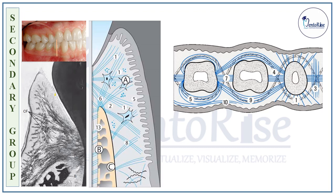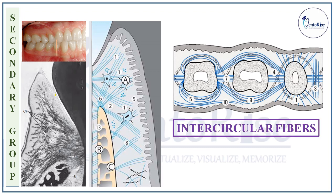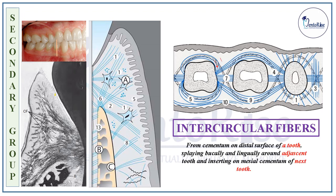The next category within the secondary group are the Intercircular fibers, which are different from the transseptal fibers. While transseptal fibers originate from the proximal surface of one tooth and insert into the proximal surface of the adjacent tooth, the intercircular fibers start from the cementum of the distal surface of one tooth, splay buccally and lingually along the adjacent tooth, and then insert into the mesial cementum of the next tooth. The course of these fibers is indicated by red arrows in the figure. These intercircular fibers stabilize the teeth in the arch.